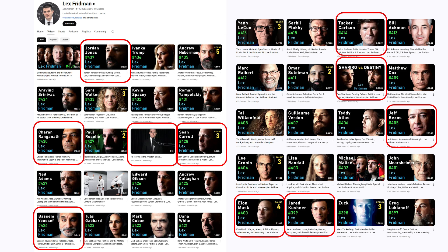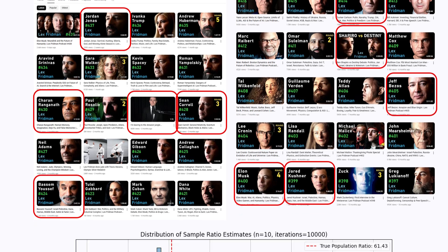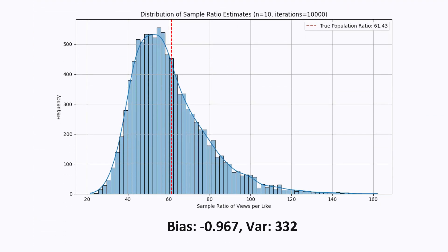I coded this up as a quick script in python, and here are the results I got. Here's a histogram of the distribution of all the ratio estimates. I've also plotted in the red line the true population ratio of all the like to view ratio of all of Lex Friedman's video, which is 61.43. Normally you will not have the true population ratio, but the reason I have this is because I actually scraped all 800 of his videos to do the simulation. This allows us to measure how accurate and how biased our ratio estimator is.